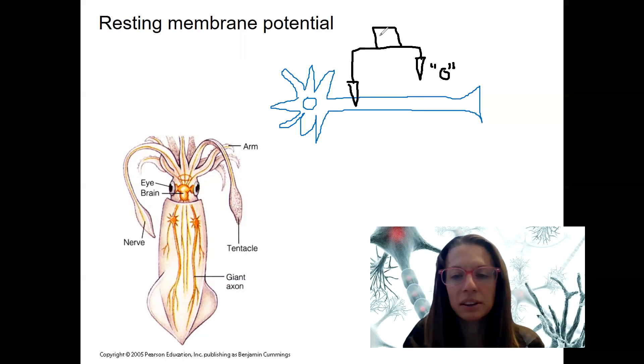It doesn't matter how many literal ions are there. We're not measuring concentration of ions. We're looking at relative charge. And that's where they found it was about minus 70 inside the cell compared to outside of the cell. 70 millivolts more negative.